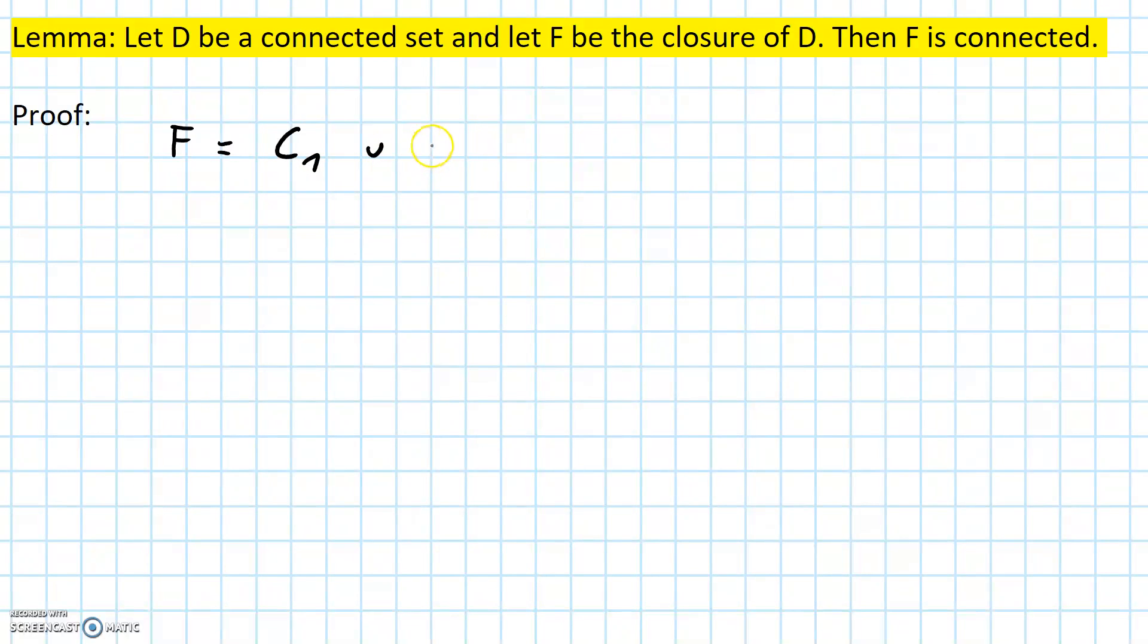So F is C1 union C2, and C1 and C2 are unequal to the empty set and are closed.